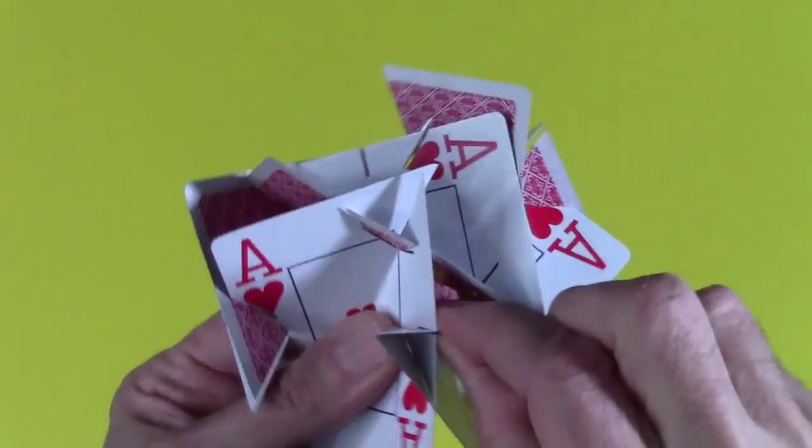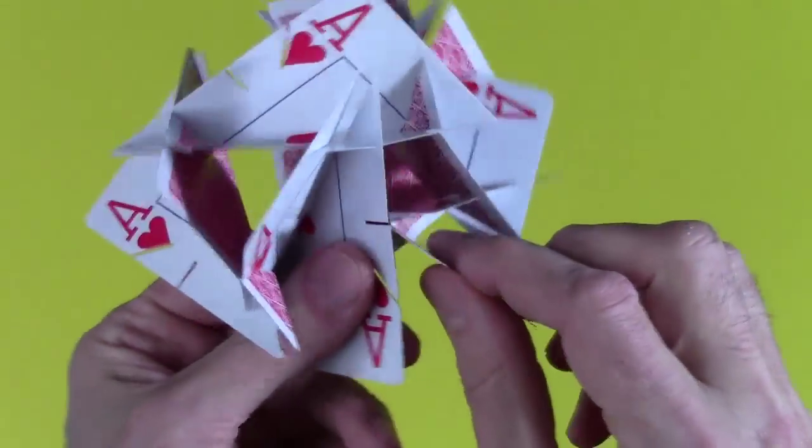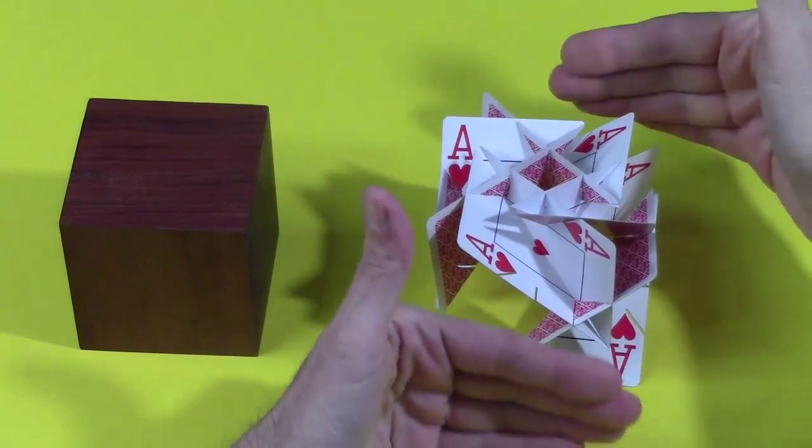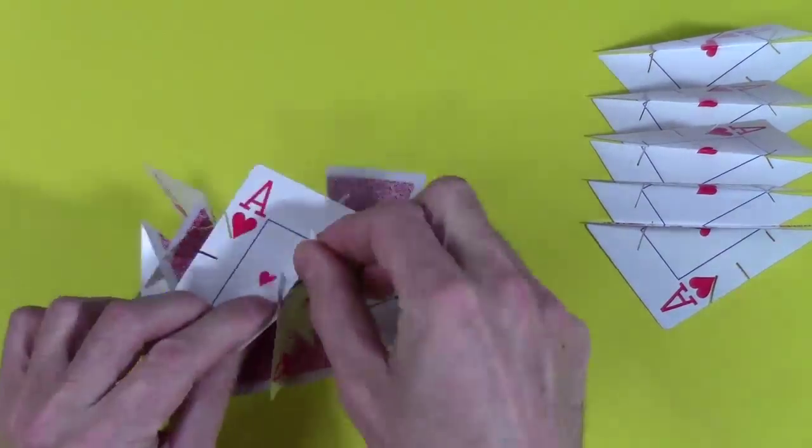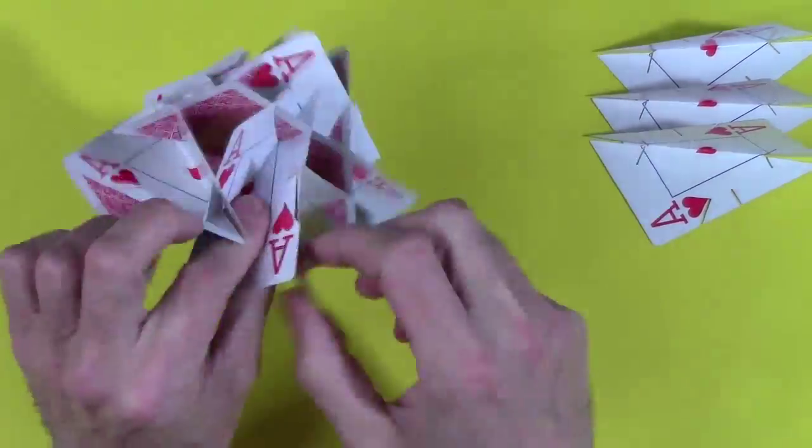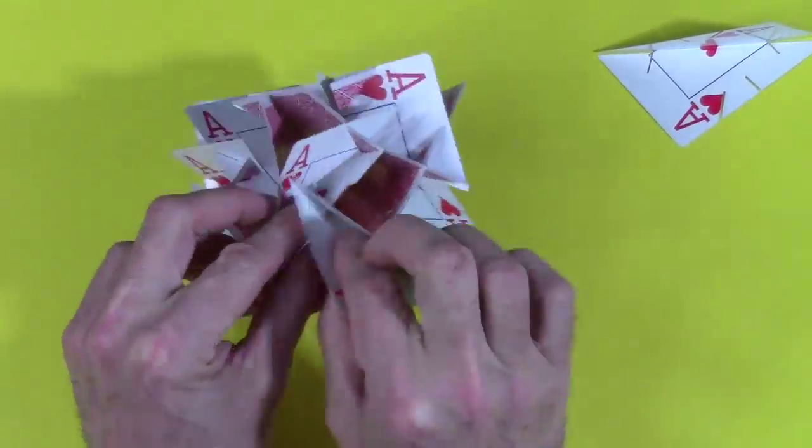You're joining a V to a V by making two connections. This becomes one face of the cube. Visualize the rest of the cube. To finish, add one card at a time, being careful to make a square tunnel in each face of the cube and a triangular tunnel at each corner of the cube.